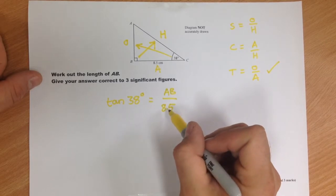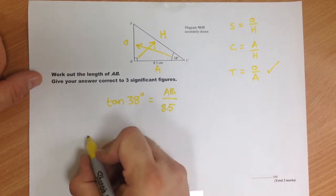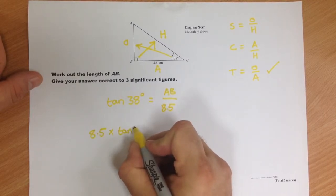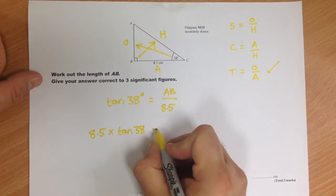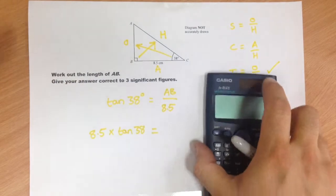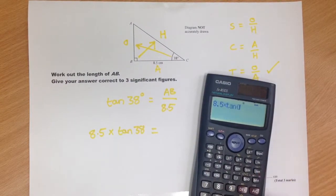Now it's fairly straightforward to get rid of a divide by 8.5. You multiply by 8.5, so 8.5 times tan 38. Type that into the calculator. We've got 8.5 times tan 38.